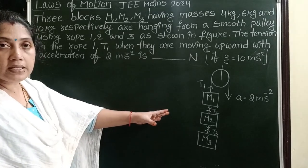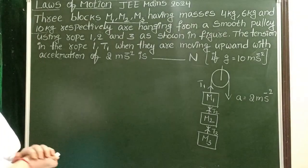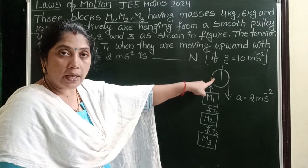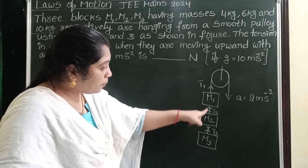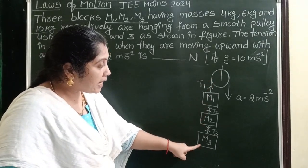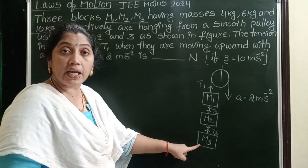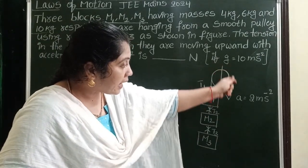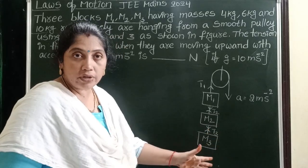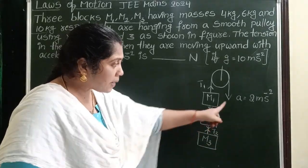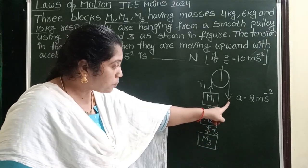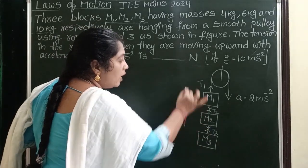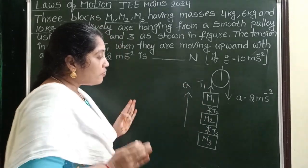The given 3 masses are accelerating in the upward direction. Observe the given diagram — this is a smooth pulley. On one side of the pulley, 3 different masses are attached with the help of 3 different strings. On the other side of the pulley, an acceleration is acting in the downward direction, so a pulling force is applied there. Due to this pulling force, these 3 blocks are accelerating in the upward direction.